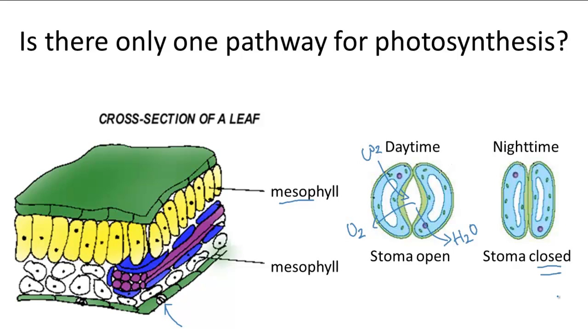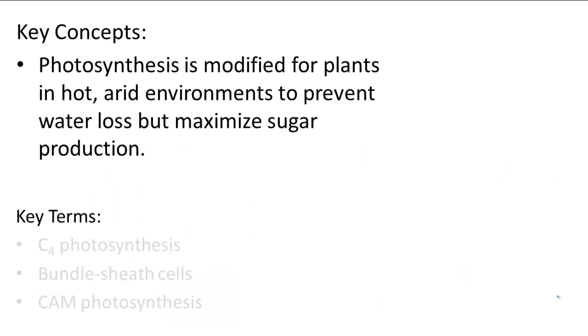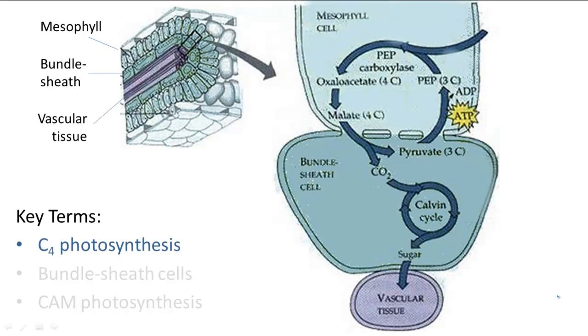So in arid environments, plants change their pattern of photosynthesis to minimize water loss but maximize sugar production, and there are two different ways that plants have adapted called C4 plants and CAM plants. C4 plants are fairly common and used in several thousand species of plant including sugarcane and corn.